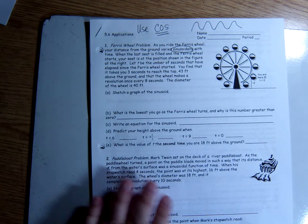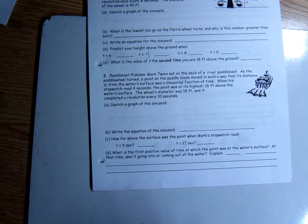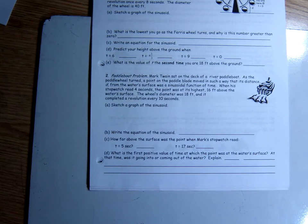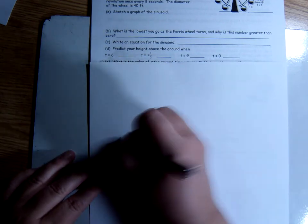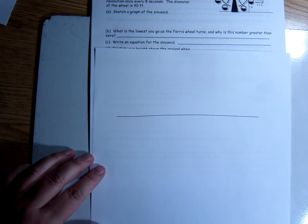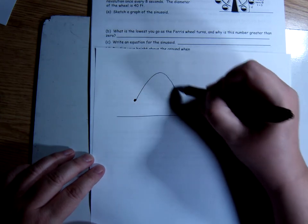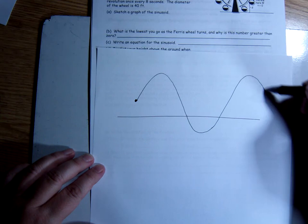All right, so let's go ahead and look. We did the ferris wheel problem in the class. So sorry if you're watching this and you weren't in our class. So I'm going to go ahead and go to the paddle boat problem. We started this one, but didn't quite finish it. So I'm going to look at that. Mark Twain sat on the deck of a river paddle boat. As the paddle wheel turned, a point on the blade moved in such a way that his distance, D, from the water's surface was a sinusoidal function of time.